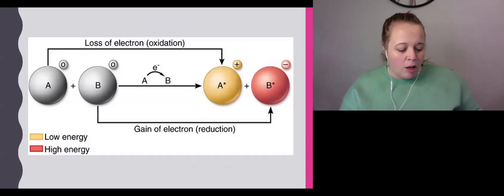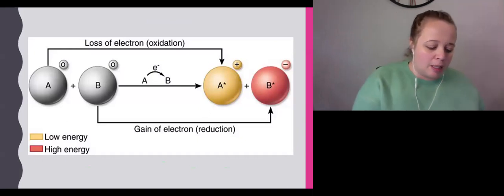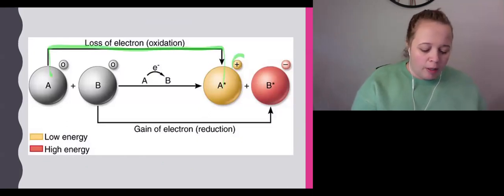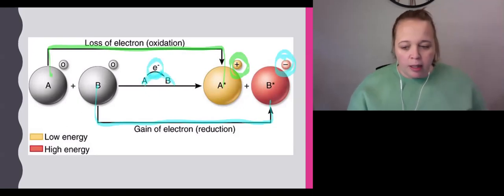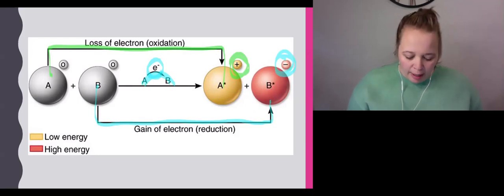This picture shows substance A loses an electron, so it gains a positive charge. At the same time, substance B gains that electron because the electron goes from A to B, giving it a negative charge. That finishes off a little intro into redox.